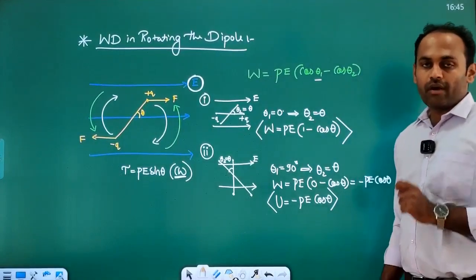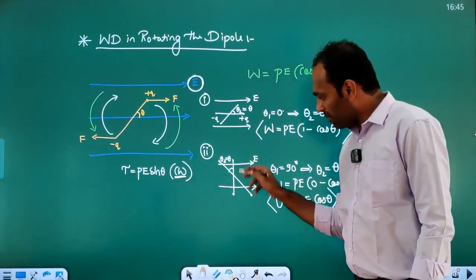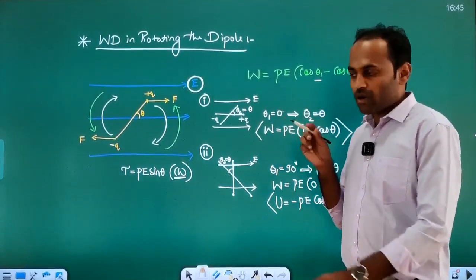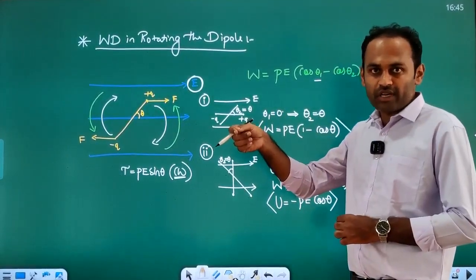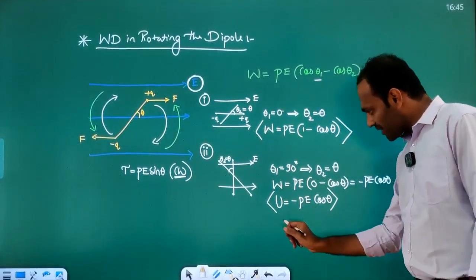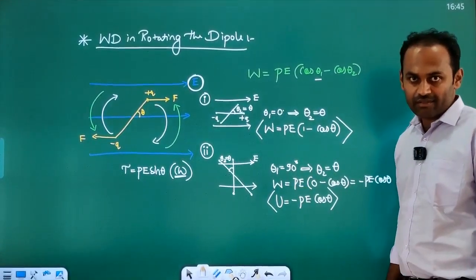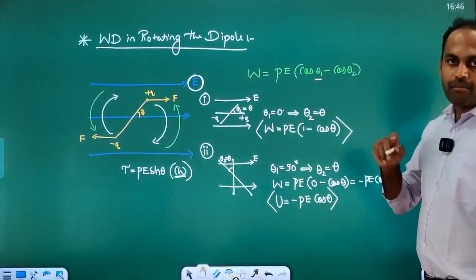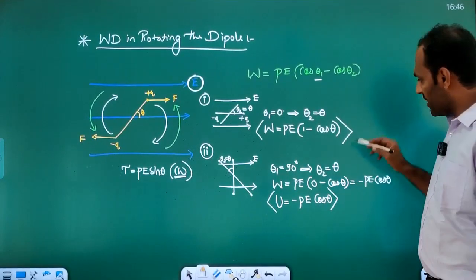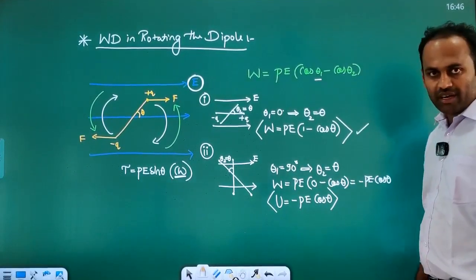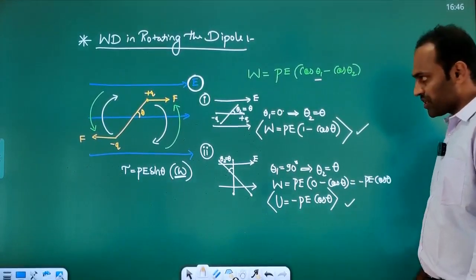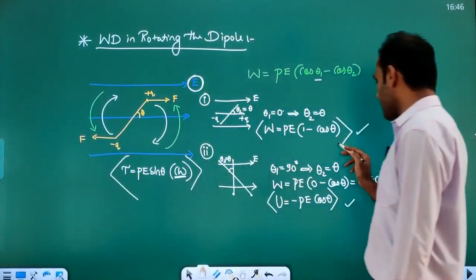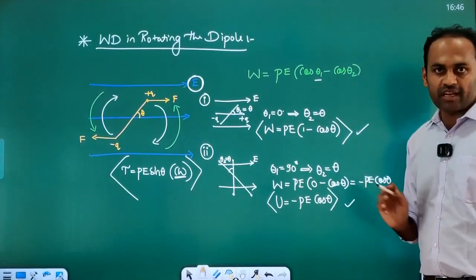Maximum torque acts on the dipole when it is perpendicular to the electric field. If we rotate against this maximum torque, the work done is maximum. This maximum work done corresponds to potential energy. So to summarize: the equation for torque is PE sin theta, the equation for work done is PE(1 minus cos theta), and the equation for potential energy is minus PE cos theta.